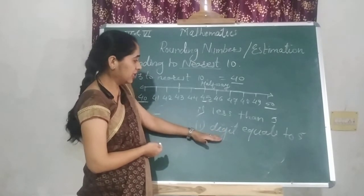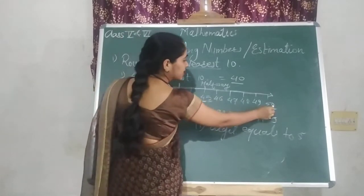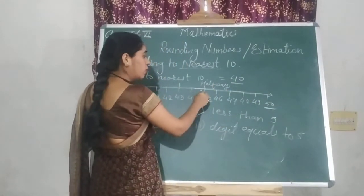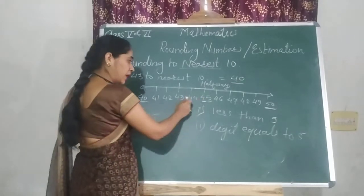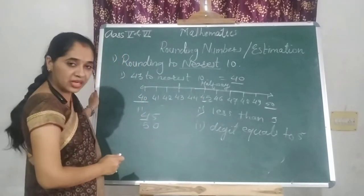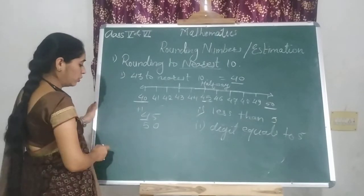Rule says that if it is 5, then replace this 5 by 0 and add 1 to its nearby place. The bigger place next to it, you have to add 1. See one more time.